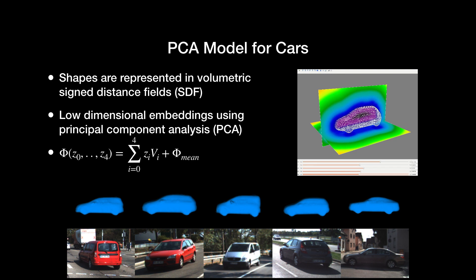In our case, we use the first 5 principal components which are denoted as V in the equation. Their corresponding coefficients are denoted as Z. Phi is the shape vector of a car. On the right, you can see by modifying the coefficients, the model can deform to represent different car shapes.